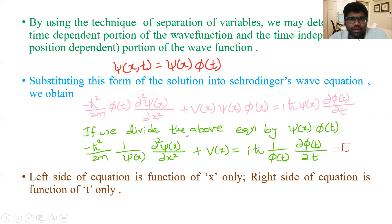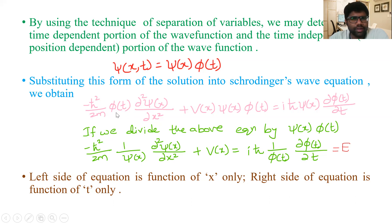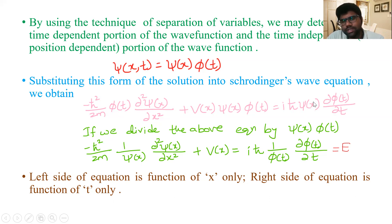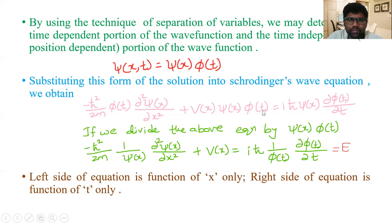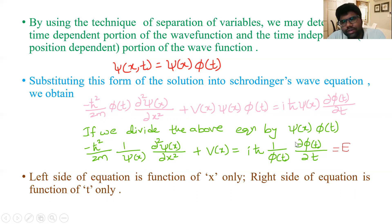Substituting ψ(x,t) = ψ(x)·φ(t) into the equation: when partially differentiating with respect to x, φ(t) is constant and taken outside; when partially differentiating with respect to time, ψ(x) is constant and taken outside. Dividing the whole equation by ψ(x)·φ(t), φ(t) cancels on the left side and we get iℏ · (1/φ(t)) · ∂φ(t)/∂t on the right.